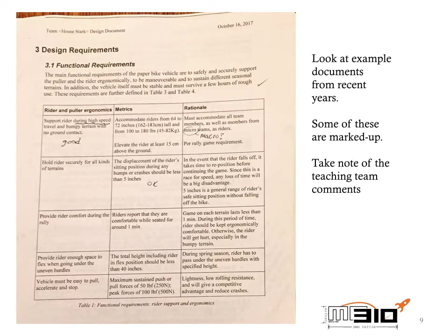Before I leave this requirements section — why is this important? It's important because the way that you decide whether a design is a good one or not is whether it meets the requirements. We can argue endlessly about whether something has an intuitive user interface or whether it's comfortable for the rider, but then we have to go another level of detail down — what does it mean to be comfortable? What does it mean to have an intuitive user interface? How would we actually measure whether something was or wasn't? For example, can you use this design without reading an instruction manual? Well, in the case of a paper bike, I would hope so.